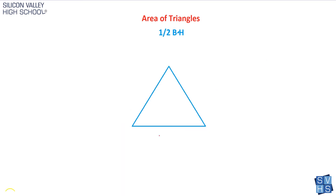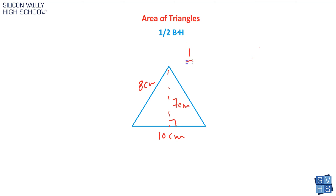Here's one more case. They give you a triangle where this is 10 centimeters, and they'll give you a decoy of 8 centimeters just to be mean, while the actual height is 7 centimeters. You won't be fooled by the decoy — you'll see that the base and the height are exactly perpendicular to one another. So it's simply 1 half times base 10 times height 7, which equals 35 centimeters squared.